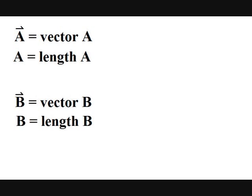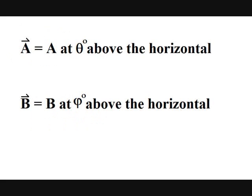I will write the magnitude of that vector with only the identifying name and no arrow. So vector A equals magnitude A at angle theta from the horizontal, and vector B equals magnitude B at angle phi from the horizontal.